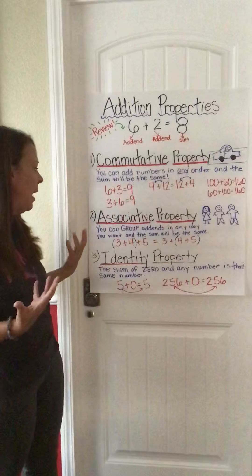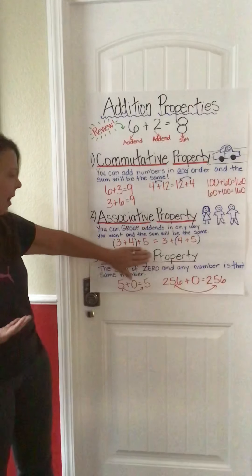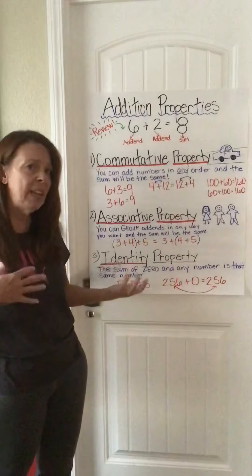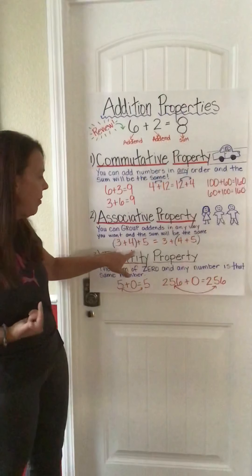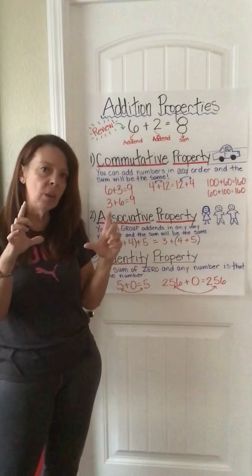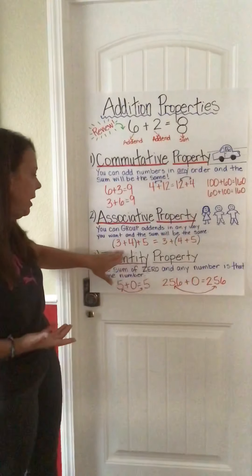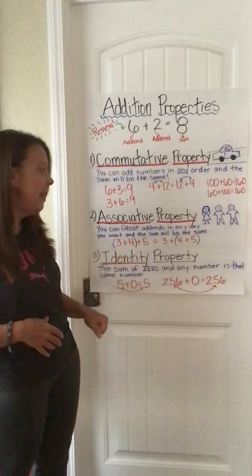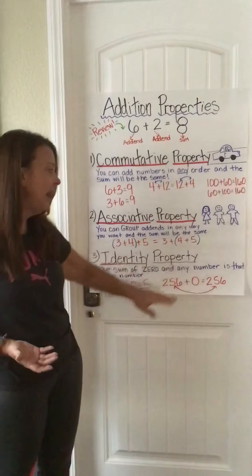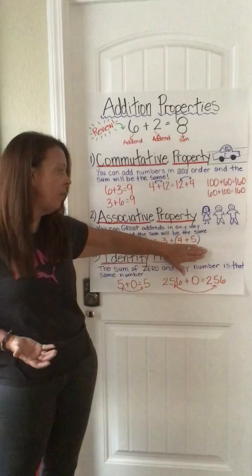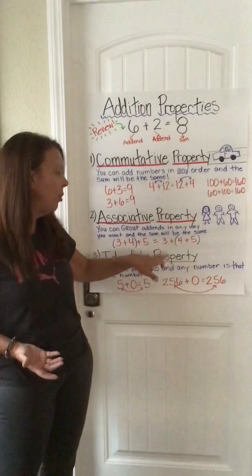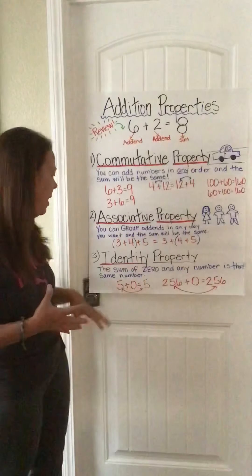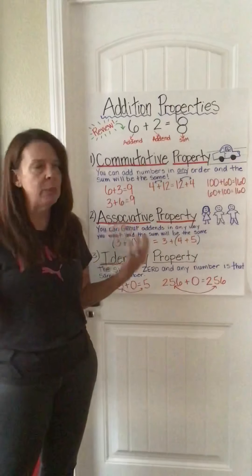Here I have 3 plus 4 plus 5 on each side of the equation. The only difference is the parentheses. When you have parentheses, it means you group those numbers together and add them first. So on this side, I add 3 plus 4 first to get 7, then 7 plus 5 equals 12. On the other side, I group 4 plus 5 to get 9, then add 3, and it still equals 12. It doesn't matter how you group the numbers — the sum is the same.